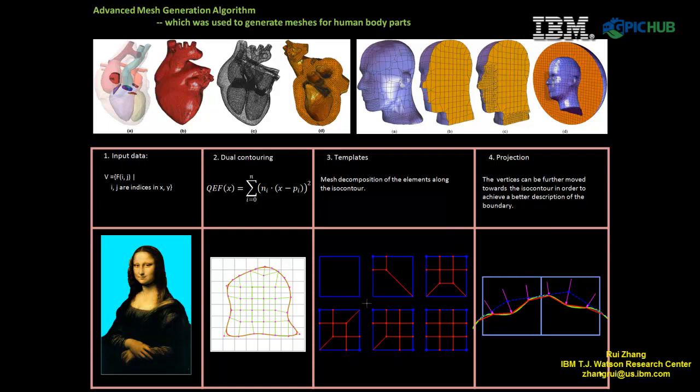For example, with the capability of the mesh generation algorithm, CFD can be used to study the natural buoyancy flow near a human body. Several steps were carried out to generate the mesh as shown in the figure below.